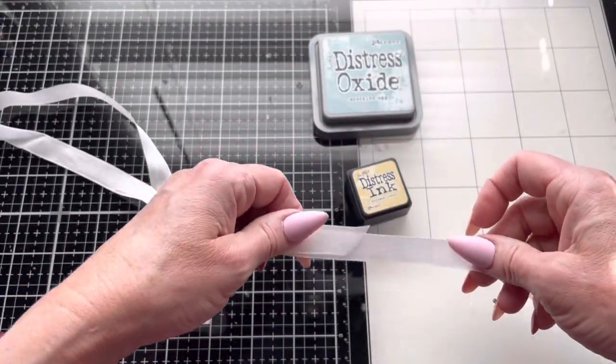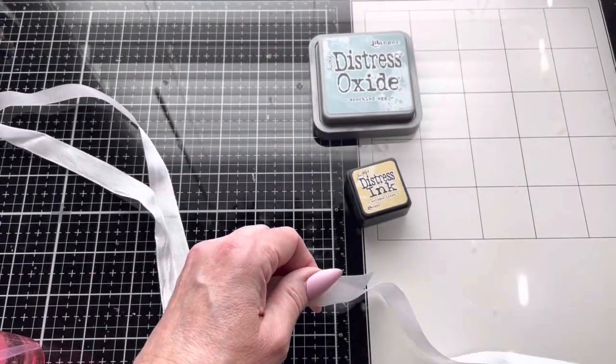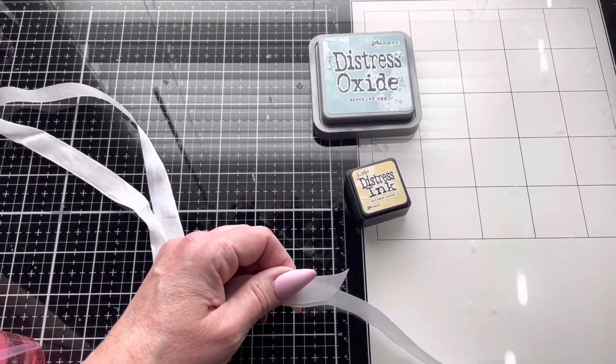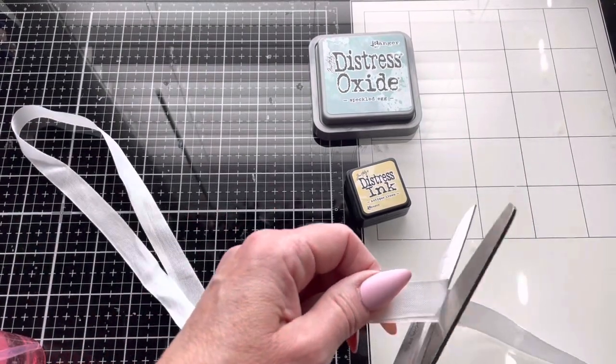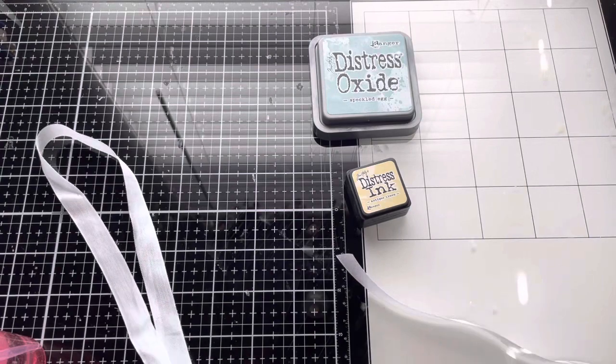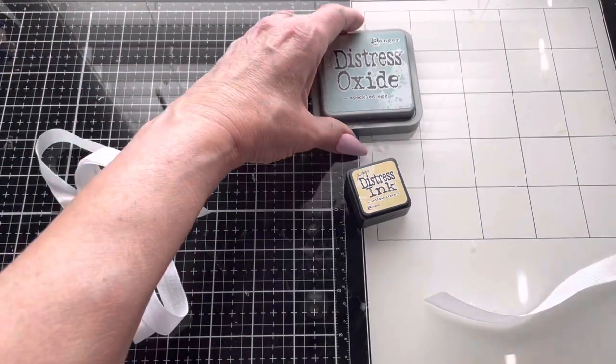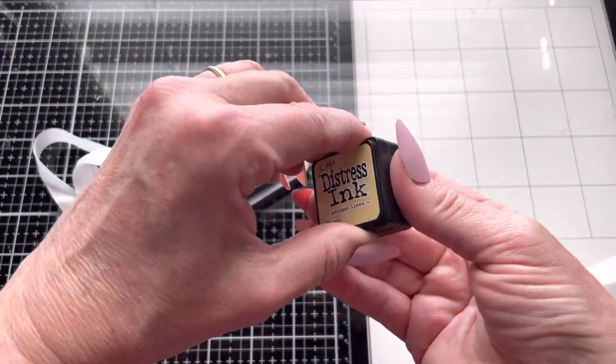You let it get all wrinkly, which is awesome—I love wrinkly ribbon. So what you do is start with your distress ink and begin by putting down some linen.